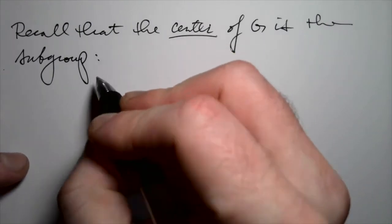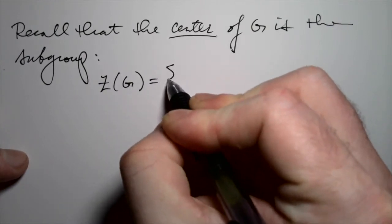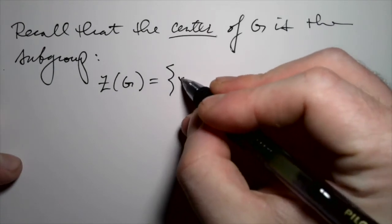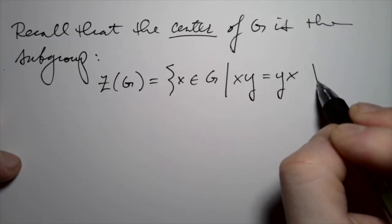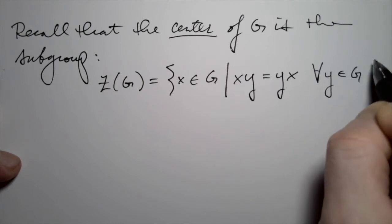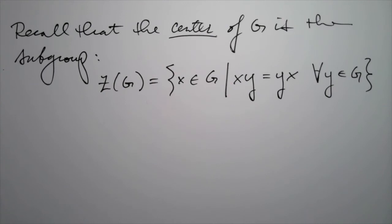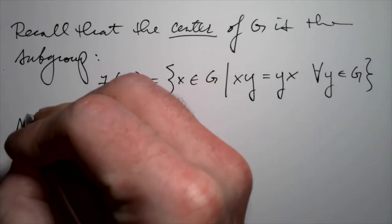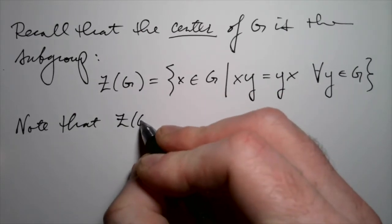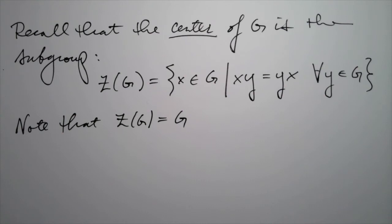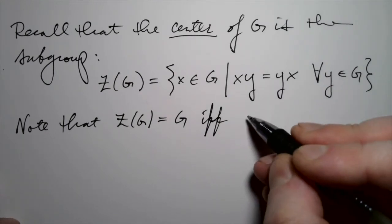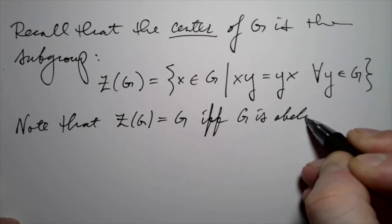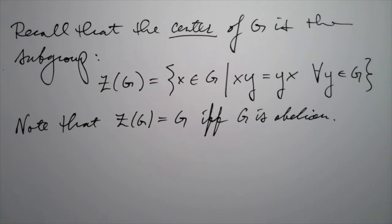Next, let's recall the center of a group. The center is the following subgroup, denoted Z of G: it's exactly the set of all elements in G that commute with all other elements. So it's the set of elements X in G satisfying X times Y equals Y times X for all other elements Y in G. Also note that the center of a group equals the entire group if and only if every element commutes with every other element — in other words, G is abelian.